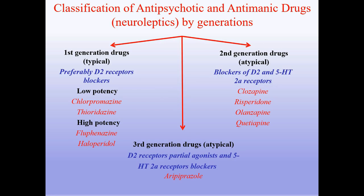The next part covers drugs used in mental illnesses: antipsychotic and antimanic drugs, also called neuroleptics. Classification by generation: first-generation drugs are typical, preferably D2 receptor blockers, including low-potency chlorpromazine and thioridazine, and high-potency fluphenazine and haloperidol. Second-generation drugs are atypical blockers of D2 and 5-HT2A receptors: clozapine, risperidone, olanzapine, quetiapine. Third-generation drugs are atypical D2 receptor partial agonists and 5-HT2A receptor blockers: aripiprazole.